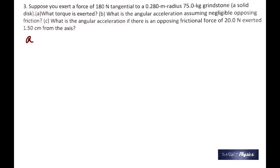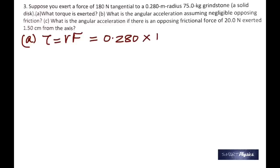In the third question, suppose you exert a force of 180 newtons tangentially to a 0.280-meter radius, 75-kilogram grindstone (a solid disk). What torque is exerted? The force is 180 N applied tangentially, so torque = r × F = 0.280 × 180 = 50.4 N·m.